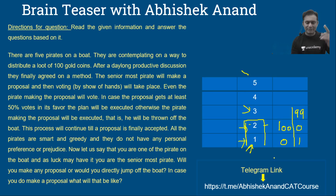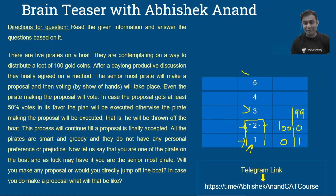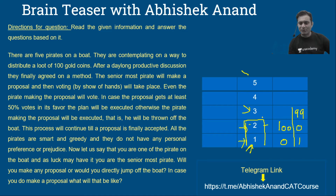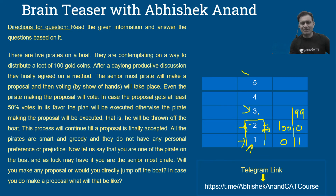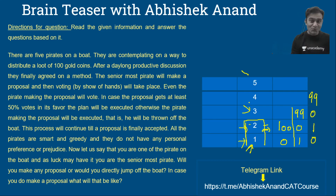Moving back further: pirate number four knows that when he's off the board, pirate three's proposal will be accepted. He needs one vote beyond his own. He targets pirate two, who would get zero under pirate three's proposal. So pirate four's proposal is: 99 coins to himself, 1 coin to pirate two, 0 to pirates one and three. Pirate two accepts because 1 is better than zero.